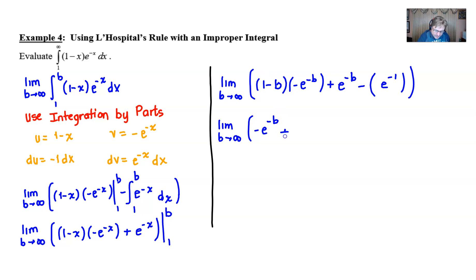And that would give us negative e to the negative b when you multiply that by 1. And then when we multiply that by negative b, I get a positive b times e to the negative b. Then I follow that up with a plus e to the negative b. And then lastly, with a minus e to the negative 1. Now, the wonderful benefit of doing that is that we should see a pair of terms that will cancel away.